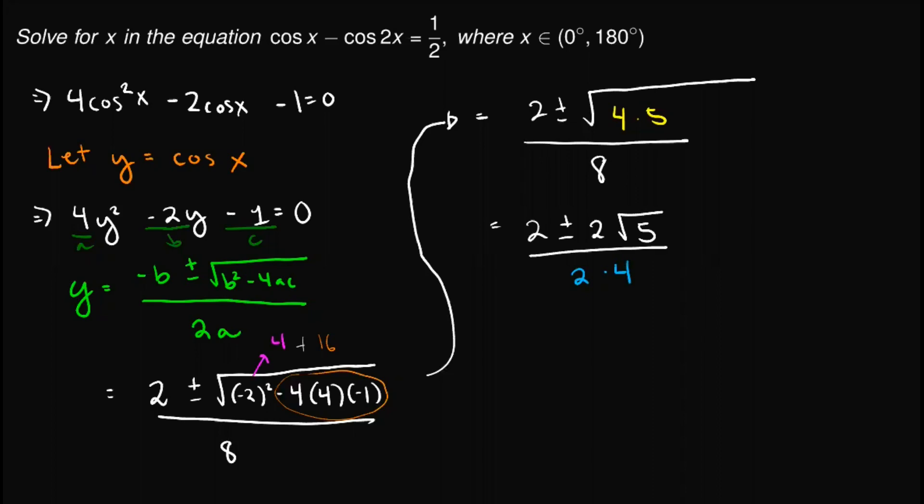And also notice that we can actually write 8 as 2 times 4. So we can divide 2 in both. Or we can write it to be clearly seen, we can write this as 2 times 1 plus minus square root of 5, all over 2 times 4. Cancelling the 2, we are left with 1 plus minus square root of 5 over 4.